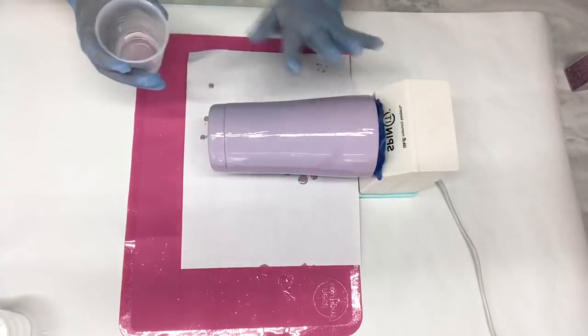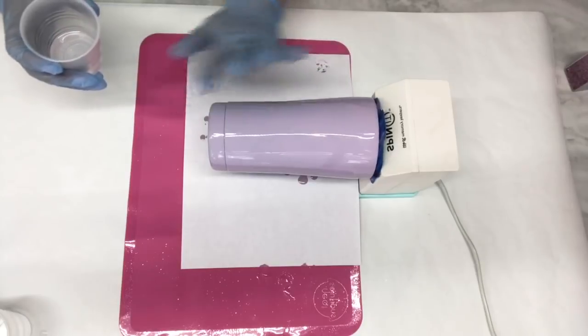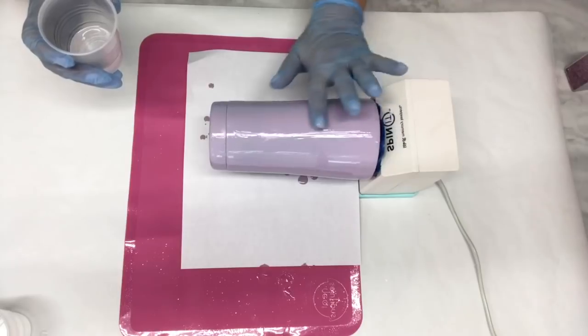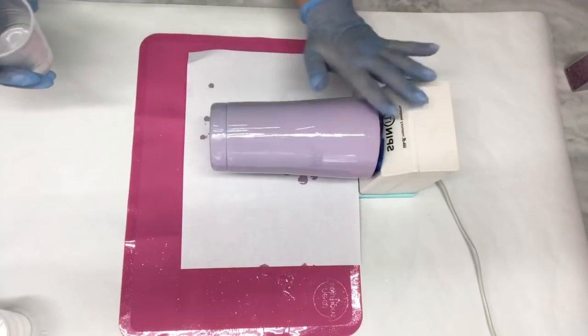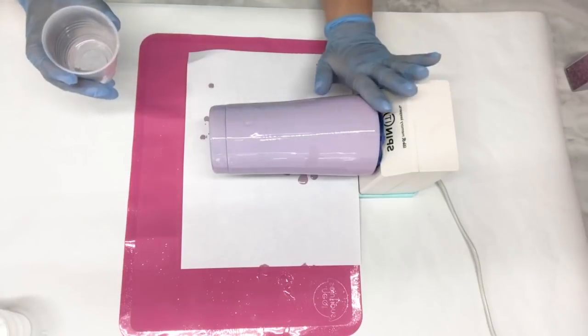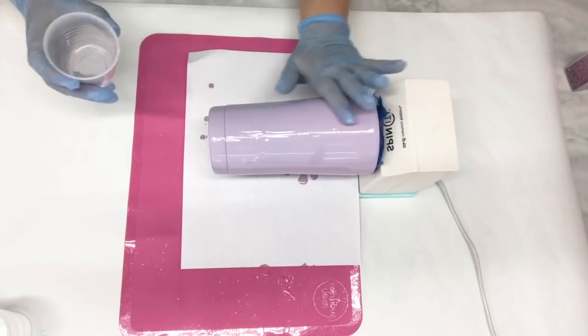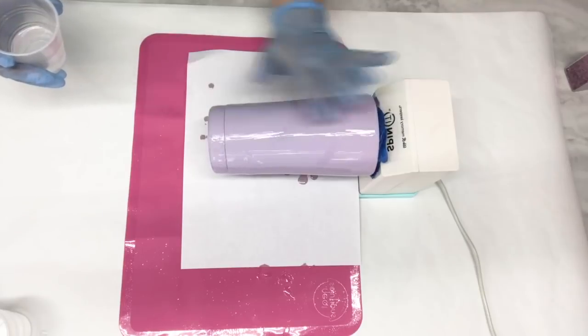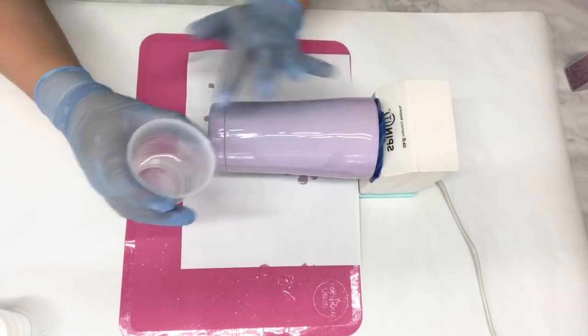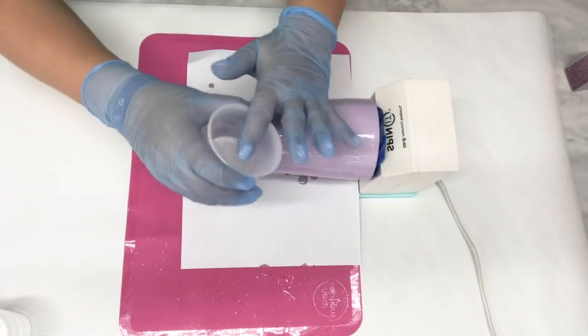As it spins, epoxy is self-leveling so it'll kind of travel to the spots that don't have epoxy or may be more bare than other spots. That's why you have to have it on some kind of turning motor—so the epoxy can cure evenly.